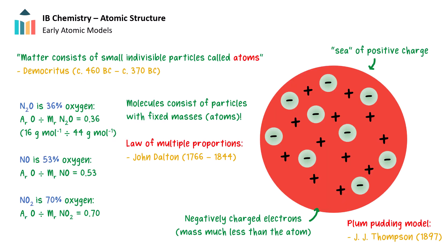All materials are made up of atoms. The word atom was coined by the ancient Greek Democritus, who suggested that matter consists of small indivisible particles. John Dalton provided support for this theory in the early 1800s, when he noticed that the mass percentages of the elements in a compound can only change by fixed amounts.